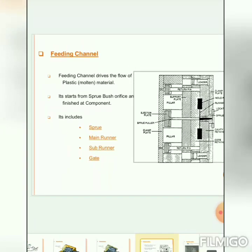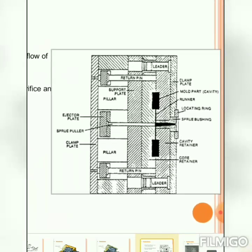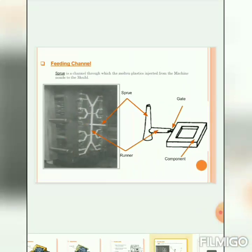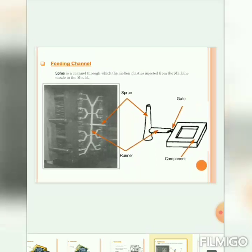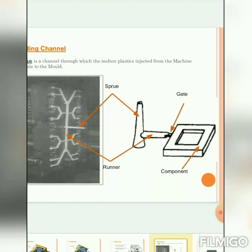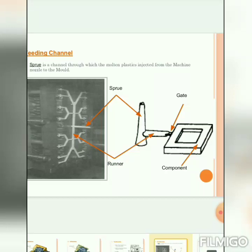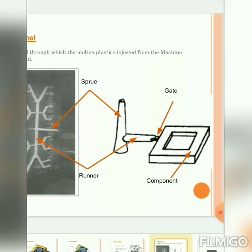The feeding channel is a device used to flow the plastic or molded material. It starts from the sprue brush orifice and finishes at the component. It includes the sprue, main runner, and sub-runner. The sprue is a channel through which the molten plastic is ejected from the machine nozzle to the mold. Through the sprue, the molten plastic material enters into the mold. You can see the runner, sprue, gate, and the rectangular component in the layout.